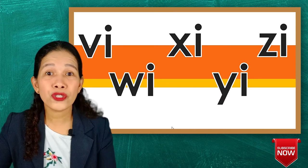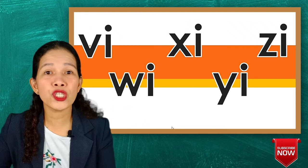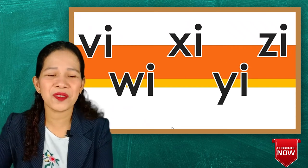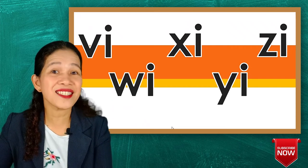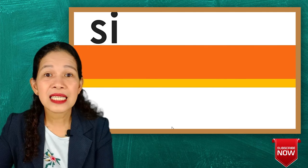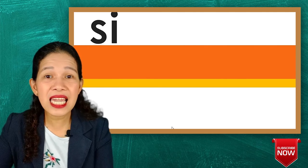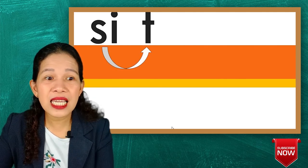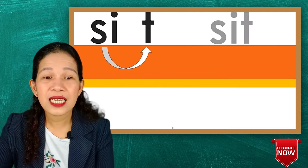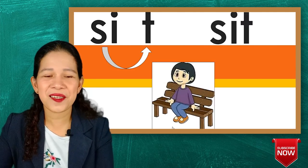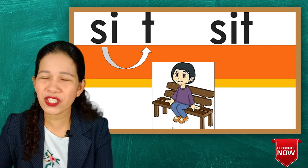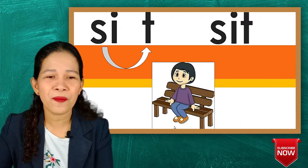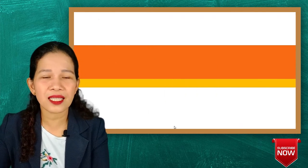Now let's go to those words with the 'i' medial sound. Let's start. Si-ti, sit. Look at the picture — look at that girl sitting on the bench. That's sit.